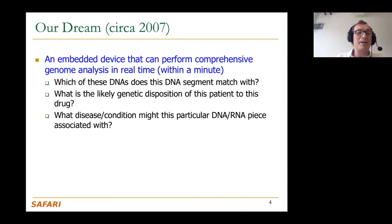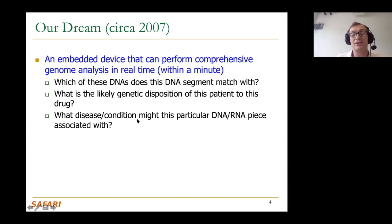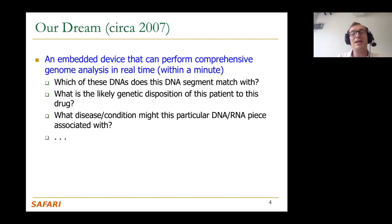There may be other questions you can ask, like what disease or condition might a particular DNA or RNA piece be associated with. This is one of the questions being asked with COVID-19 sequencing right now. We're going to see some examples of this, and at some point we'll have a longer lecture on specialized architectures for genomics in this course.